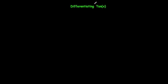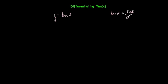In this video, we're going to look at how to differentiate tan x. So if y is equal to tan x, remember tan x is equal to sin x over cos x. So that means that y would also be equal to sin x over cos x. Let's use the quotient rule to differentiate this.